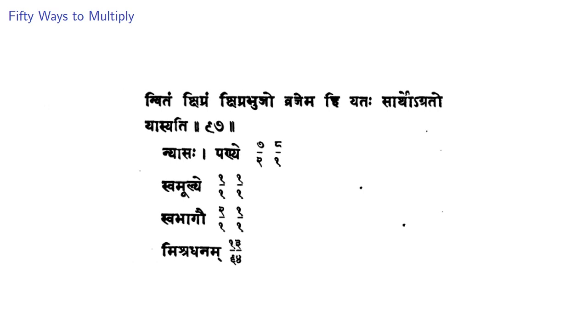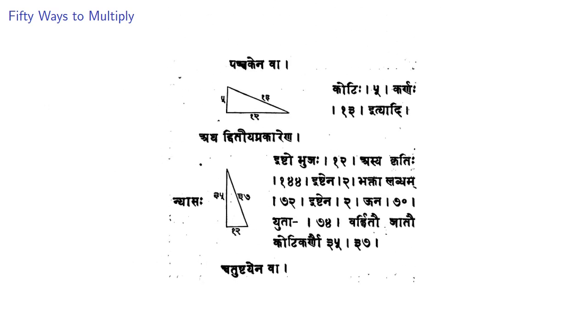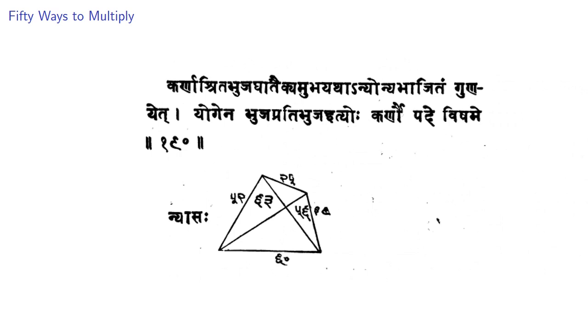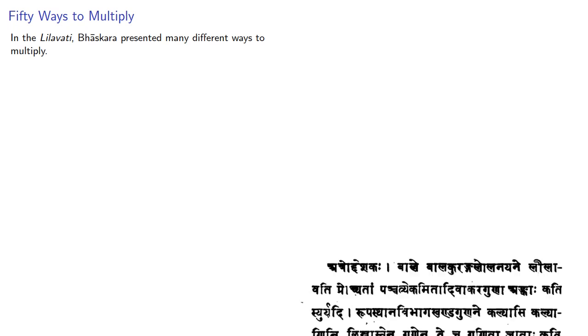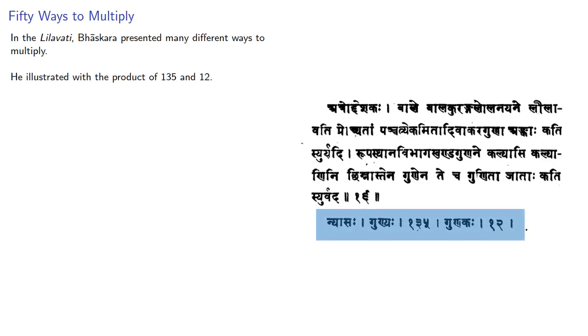The Lilavati, the book that is, is a comprehensive treatise on many areas of mathematics. Like the Rhind papyrus, it gives us insight into how the ancient Indians performed computations. In the Lilavati, Bhaskara presented many different ways to multiply, and he illustrated these with the product of 135 and 12.